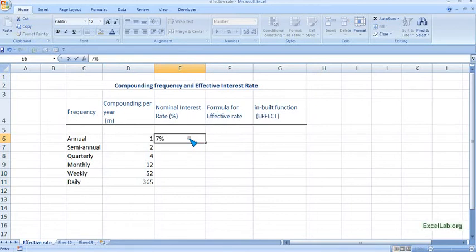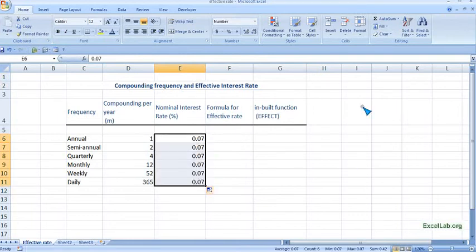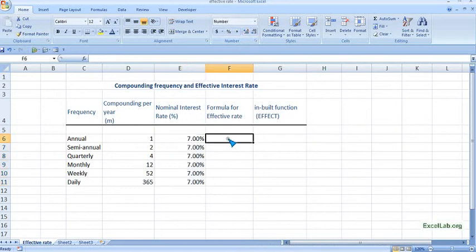We'll put the percentage sign. Now to calculate the effective rate, we'll put the formula. Here I'm mentioning the formula: it is one plus the nominal rate, which is R, divided by frequency per year, which is represented by M.